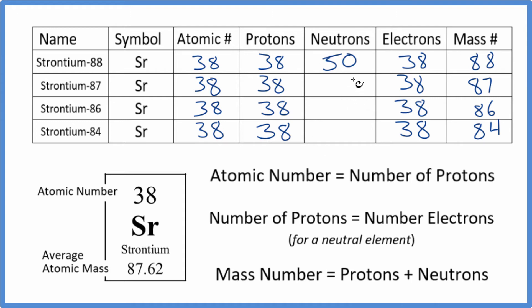And likewise, we can find the number of neutrons for each of these as well, based on the mass number. 87 minus 38, that's 49. And so on.